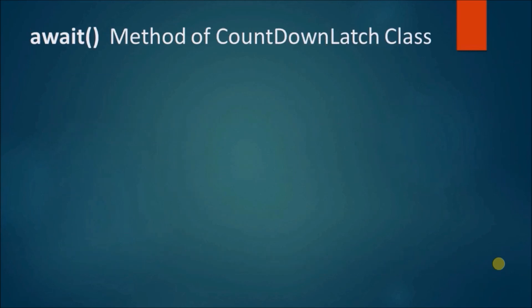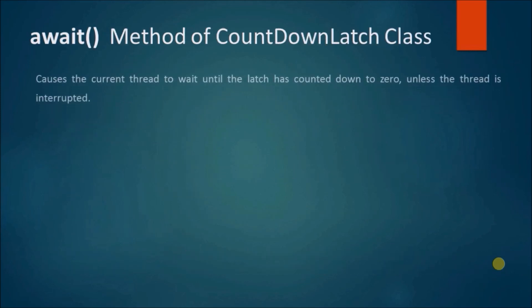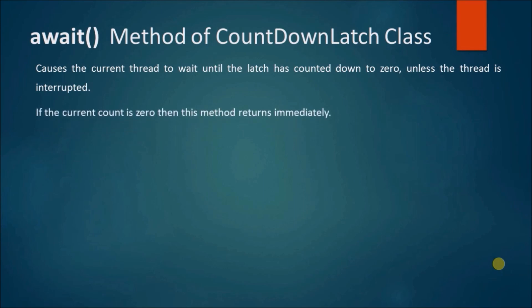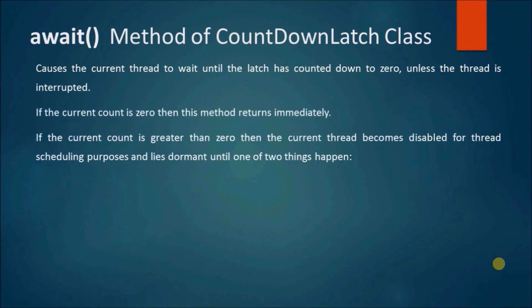The await method of the countdown latch class causes the current thread to wait until the latch has counted down to zero, unless the thread is interrupted. If the current count is zero then this method returns immediately. If the current count is greater than zero then the current thread becomes disabled for thread scheduling purposes and lies dormant until one of two things happen.